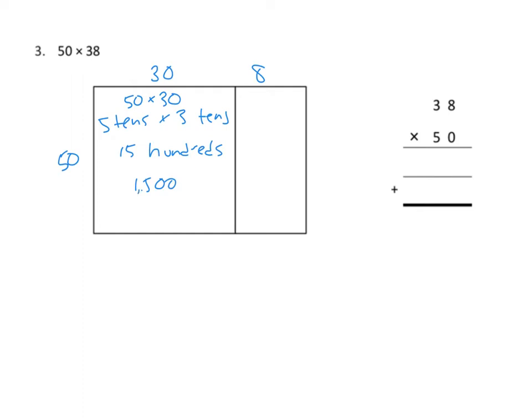On the right-hand side, we are multiplying 50 times 8. We're doing 5 tens times 8, and so that's going to be 40 tens. 40 tens is the same as 400.